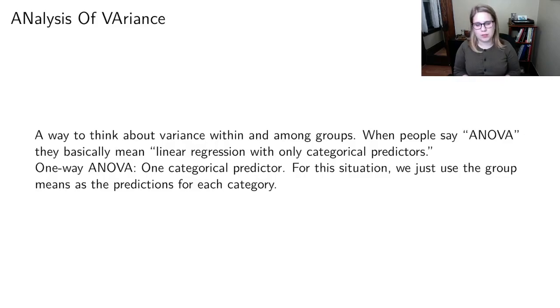So we're going to start with the simplest case which is one-way ANOVA and that's just linear regression so it's got a quantitative response variable and one categorical predictor. And for this situation we're just going to use the group means as the predictions for every single category.